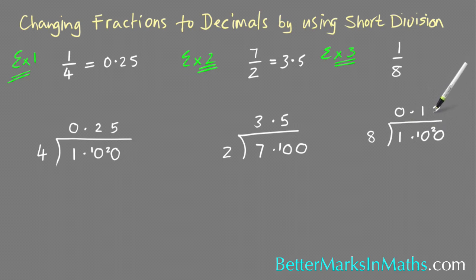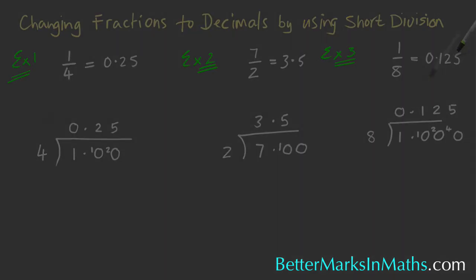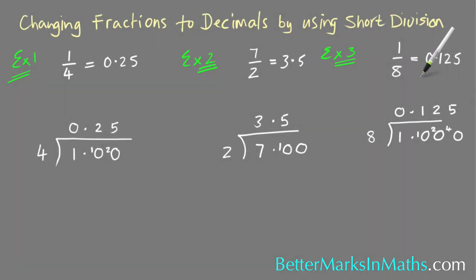How many eights in 20? There's two. Two eights are sixteen, so that means there's going to be four left over. Put another zero there, and then how many eights in 40? There's five. So one eighth—and then there's none left over—so one eighth is equal to zero point one two five.